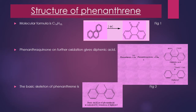Phenanthrene on oxidation with chromic acid gives phenanthroquinone, which on further oxidation with hydrogen peroxide in the presence of acetic acid gives diphenic acid. The diphenic acid on distillation with soda lime gives diphenyl. All these reactions are performed to identify the basic skeleton of phenanthrene, and they collectively reveal the skeleton of phenanthrene as shown in the final figure on the slide.